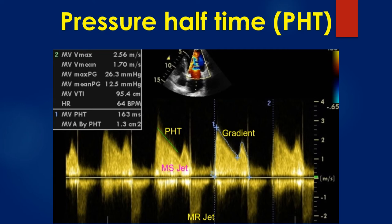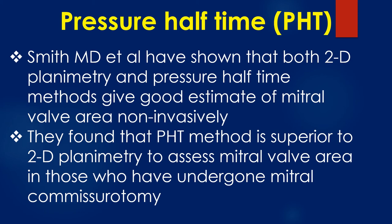In this image, the green cursor measures the pressure half-time of the mitral stenosis jet. In this case, the pressure half-time was 163 ms and the estimated mitral valve area by pressure half-time was 1.3 cm². Smith and colleagues have shown that both two-dimensional planimetry and the pressure half-time method give good non-invasive estimates of mitral valve area. They found that the pressure half-time method is superior to two-dimensional planimetry in those who have undergone mitral commissurotomy.